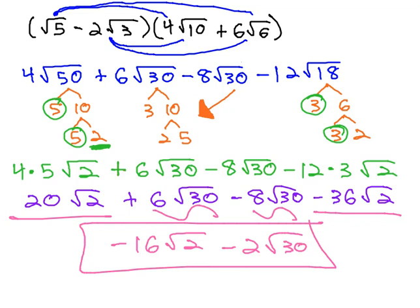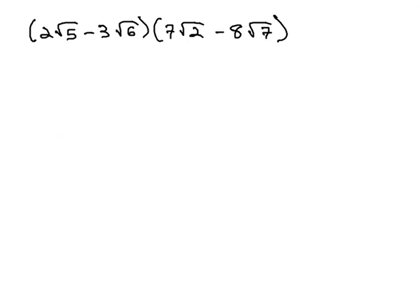Let's see if we can do one more example, where we foil out with radicals. Here we have 2 root 5, minus 3 root 6, times 7 root 2, minus 8 root 7.